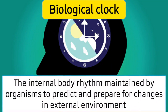Based on these two rhythms, because these rhythms are affected by the external environment — for example, the opening and closing of stomata in plants can be dependent on the external environment — plants have an internal biological clock running inside them. Since there is a natural clock running in the environment, such as the rising and setting of the sun, there is a corresponding biological clock that runs inside plants. This internal clock is called the biological clock, defined as the internal body rhythm maintained by organisms to predict and prepare for changes in the external environment.